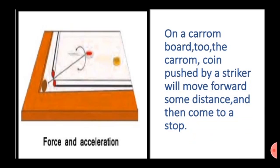On a carrom board, a carrom coin pushed by a striker will move forward some distance and then stop. If the coin is pushed after applying talcum powder to the carrom board, it will keep moving for a longer time before stopping. We can infer that the velocity of the coin decreases due to friction. If friction between the carrom board and coin is reduced, the coin keeps moving longer — meaning if no friction force is acting on a moving body, it will keep moving with constant velocity.